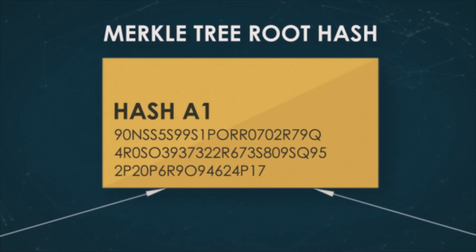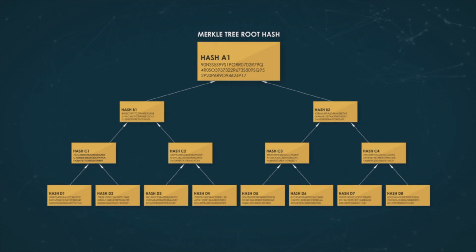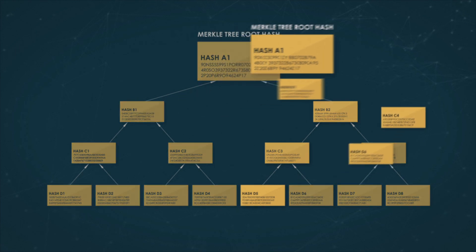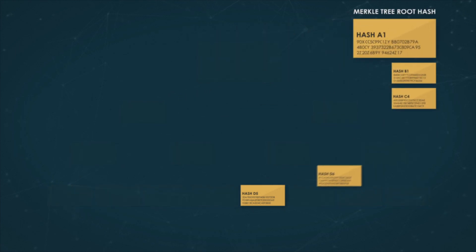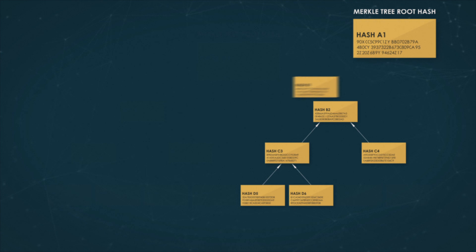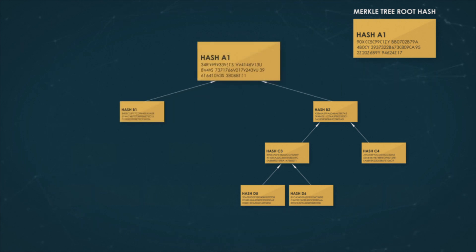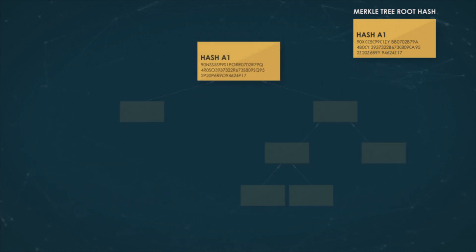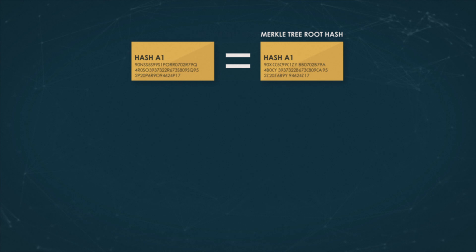At the same time, it is easy to check whether a certain piece of information was present in the source data. One simply needs to take the hash of the part in question and all the hashes up the tree, along with their pairs, repeat the hashing steps, and compare the final result with the root hash of the tree.